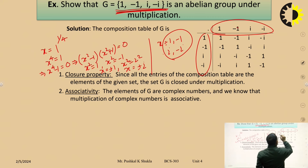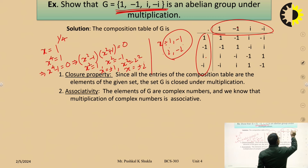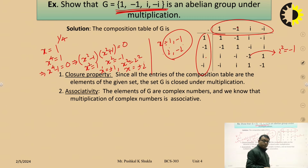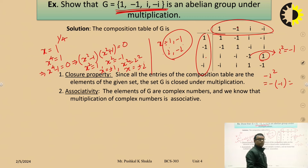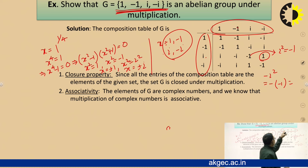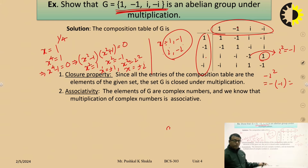Making the composition table: 1×1=1, 1×(−1)=−1, 1×i=i, 1×(−i)=−i; (−1)×1=−1, (−1)×(−1)=1; i×1=i, i×(−1)=−i, i×i=i²=−1, i×(−i)=−i²=1; (−i)×1=−i, (−i)×(−1)=i, (−i)×i=−i²=1, (−i)×(−i)=i²=−1. By this way we form the complete composition table.